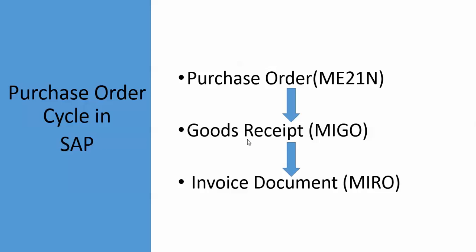After creating the goods receipt we have to pay the vendor, so we make a payment to our vendor. For this we have to create our invoice document in MIRO transaction code. These are the three steps for the purchase order cycle in SAP. In this video, part 1 of the purchase order cycle, we will learn how to create a purchase order and how to transmit a purchase order to a vendor.